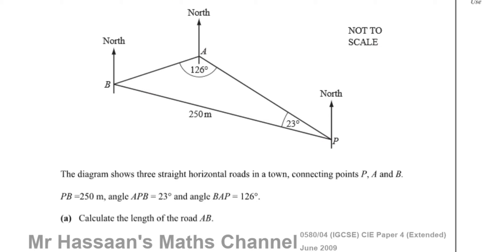So we need to calculate the length of the road on this side here, which is AB. I'll just call it X and mark it as X.